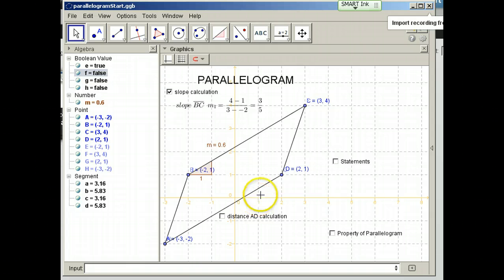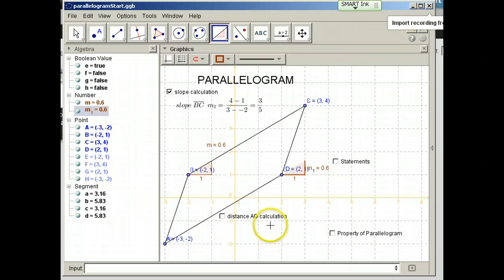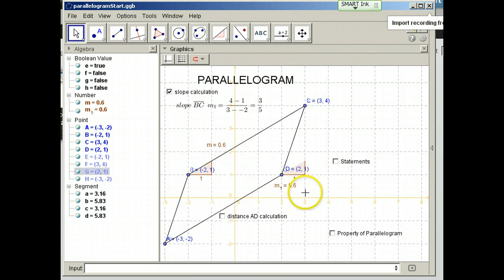Now, what about the side opposite this side? Well, if I wish to find the slope here, it is also 0.6. So the slopes are equal, which means this segment is parallel to this segment.